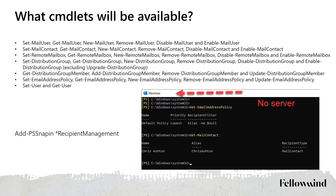Once connected, you will be able to work only with a limited set of cmdlets — specifically, you will have access to all cmdlets for working with recipients. For example, if you want to hide a mailbox from an address book, you can do it with Set-RemoteMailbox. Once again, as long as you use on-premise Active Directory Domain Services and Exchange Online, you will use Exchange Management Shell on-premise.